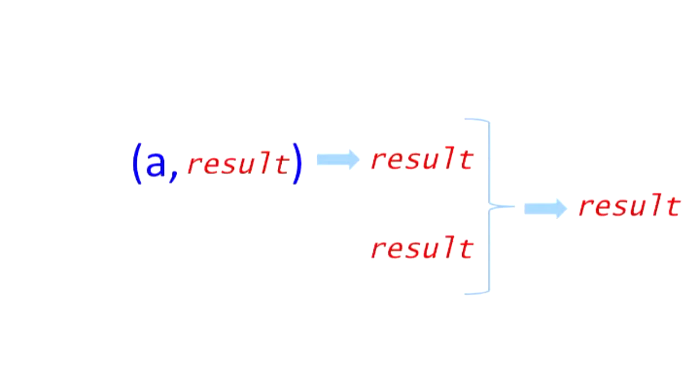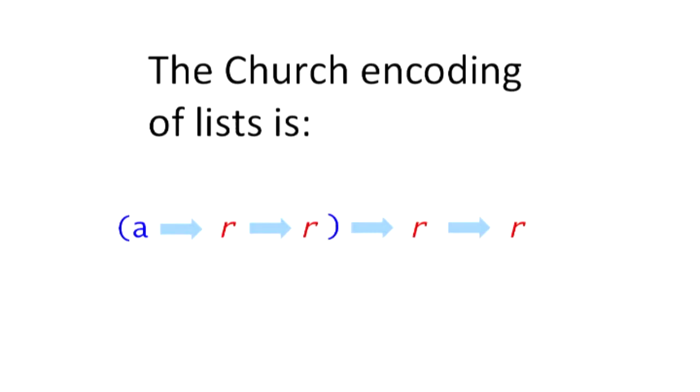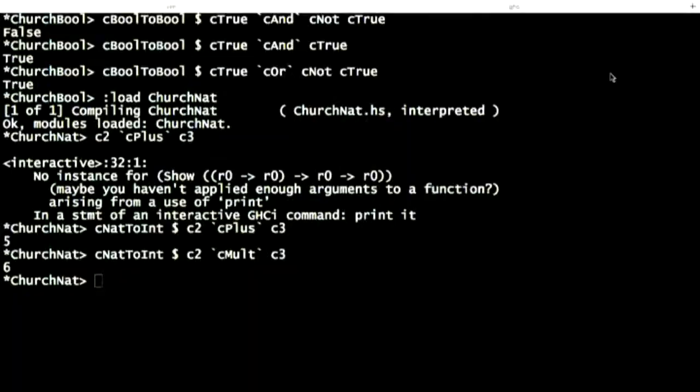So, then that becomes our church encoding of the list. Now, if you've done any functional programming before, you might recognize this type signature. This is FoldR. So, most functional languages have some idea of a fold, a fold right or fold left over a list, which allows you to break it down piece by piece and squish it into a single value. And what's interesting is it's not just an operation you can perform over a list. FoldR is the list, in a sense. And so, all of these church encodings are essentially folds over their respective data structures.